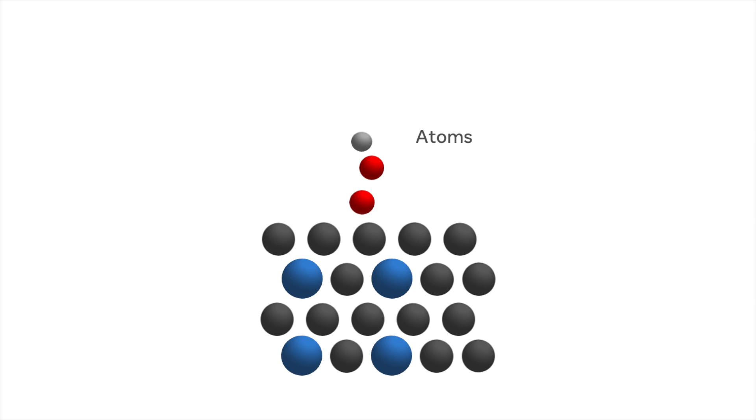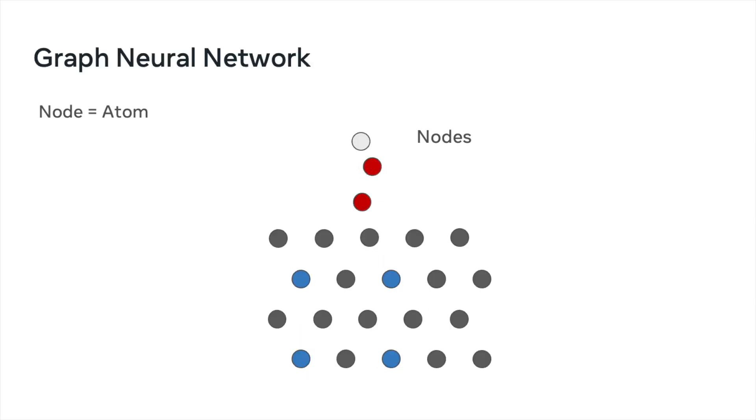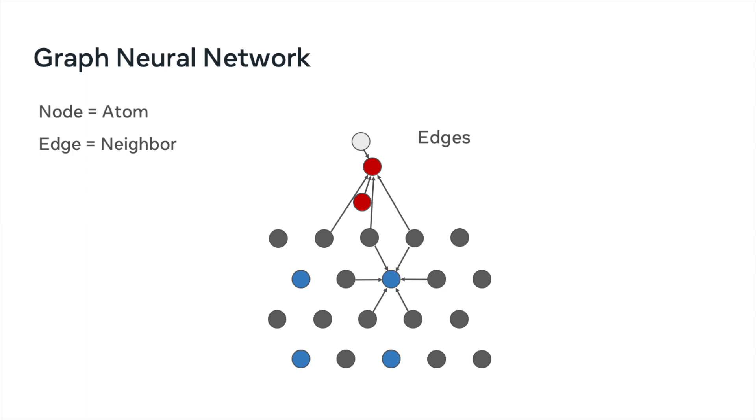The way these structures are typically modeled is using something called a graph neural network. Each atom is represented using a node, and each edge corresponds to neighboring atoms. So how do we actually define the neighbors of an atom? Well, one of the easiest ways to do this is just find all neighboring atoms within a certain cutoff distance. So for instance, here we have all the atoms that are within five angstroms of the atom of interest.